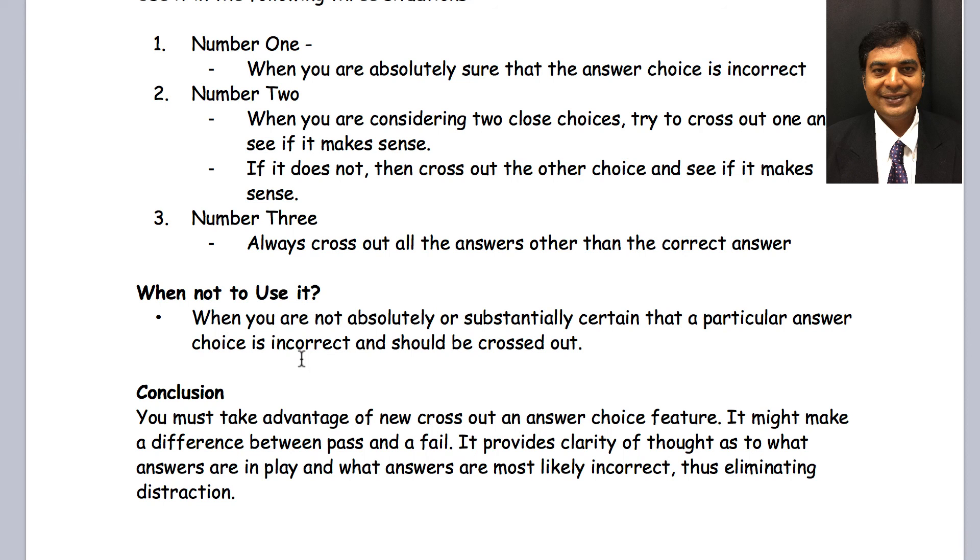In conclusion, you must take advantage of this cross out feature. It is a big deal. It's not a big deal on our day-to-day life on normal Windows or Mac computers, but it is a big deal that this capability is available inside ProMetric Testing Center for the patent bar exam. Take advantage of it. It will avoid the distractions. Examiners are very good at writing these distractions into the question-answer choices. Your job is to find those distractors and right-click them and get them out of your mind and get them out of the contention so you can focus on close choices and eventually find the right answer.